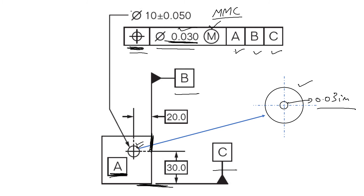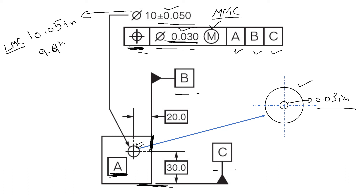The basic diameter of the hole is specified with general tolerances. Writing out the limits: the LMC of the hole is 10.05 inches and the MMC is 9.95 inches. There is also a modifier for maximum material condition (MMC) in the feature control frame.